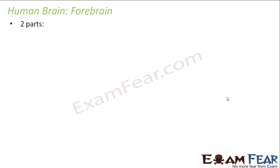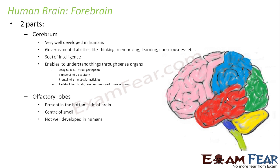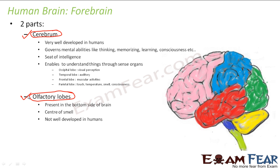The forebrain is again broadly classified into two parts: the first part is cerebrum, and the second part is the olfactory lobes. Now the cerebrum is very well developed in humans, and it forms quite a big part of the brain performing many different functions.